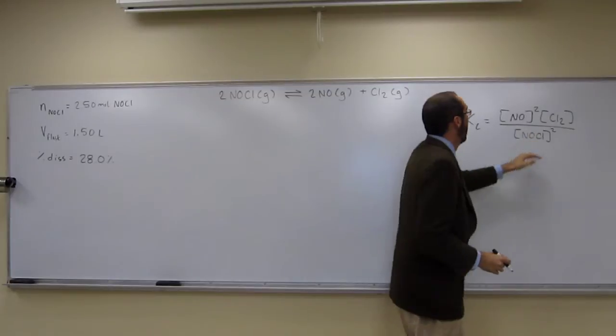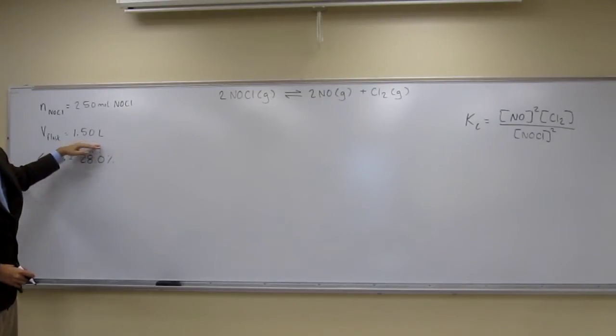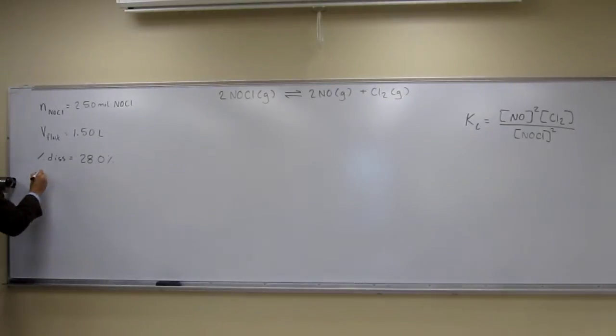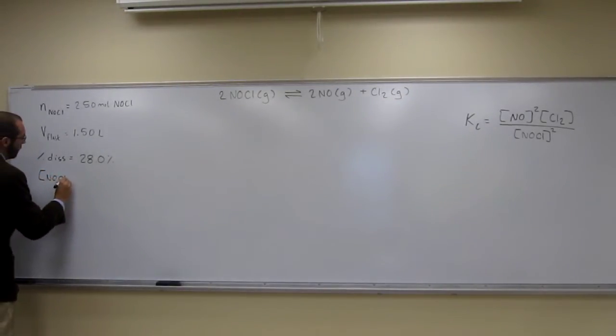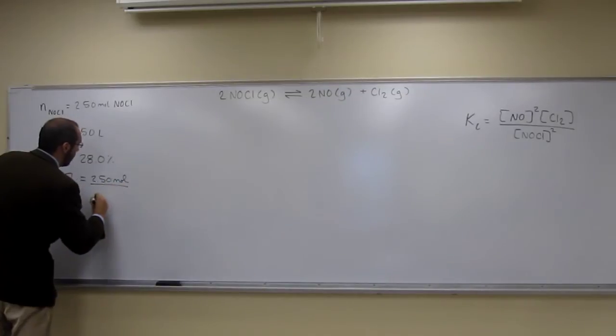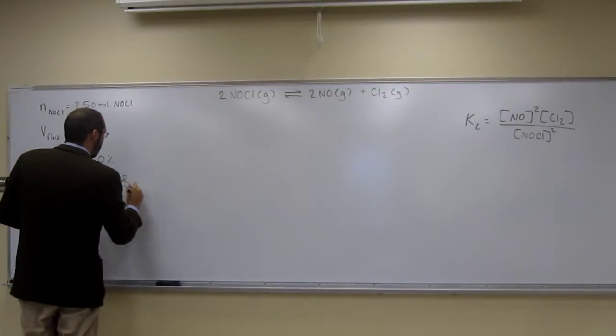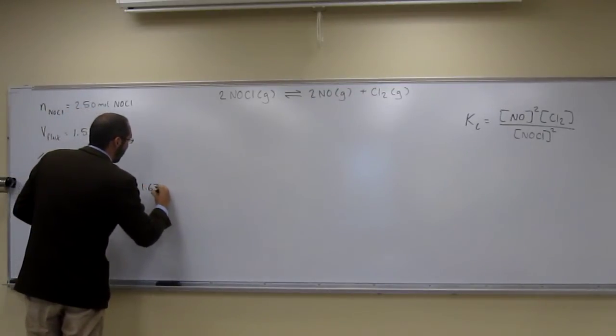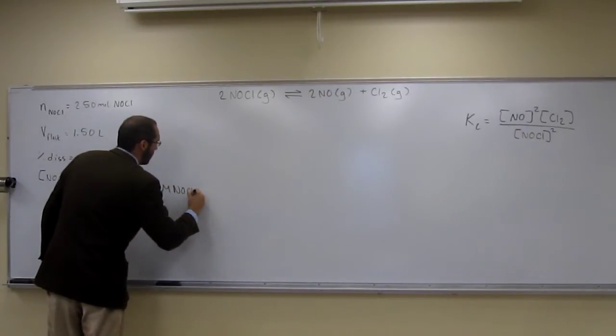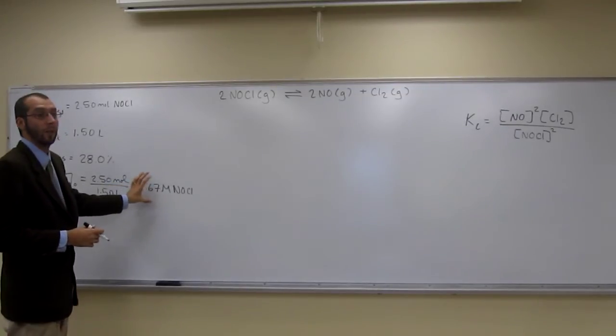And remember, that's at equilibrium. Here we have the number of moles we put in to begin with, and the volume we started with. So that's original. Let's calculate that first. The concentration of nitrosyl chloride originally is going to be 2.50 moles divided by 1.50 liters. When we do that, 1.67 molar NOCl. So that's at the beginning, that's initially. That's not what happens though at equilibrium, or that's not the concentration at equilibrium.